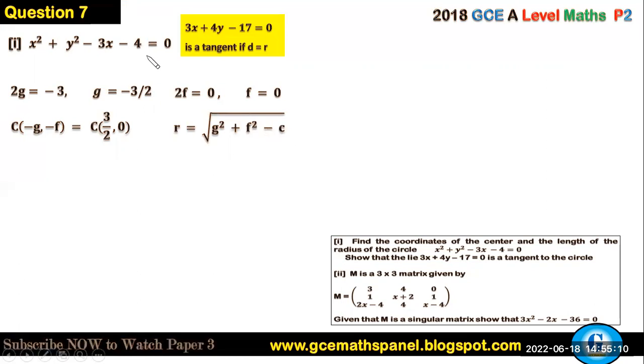Where c here is minus 4, so we have the square root of 3 over 2 squared plus zero squared minus minus 4, which is the square root of 25 over 4, that gives us 5 over 2. That's the radius.